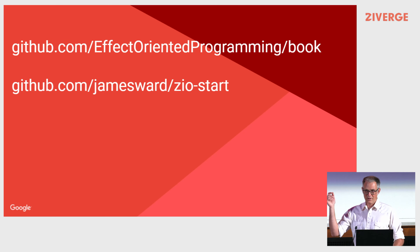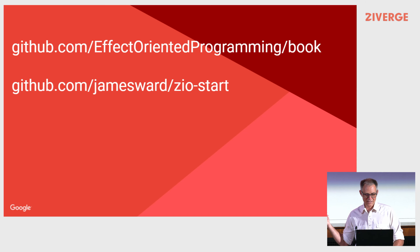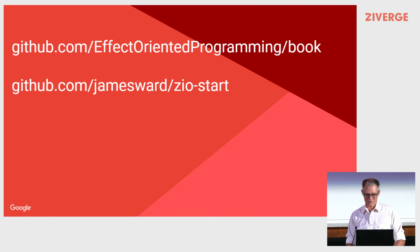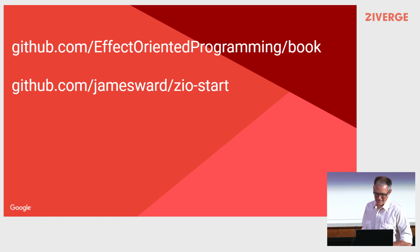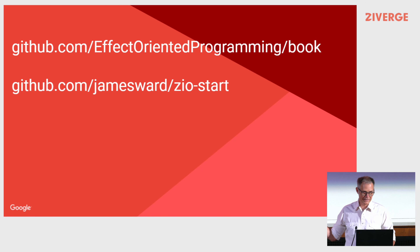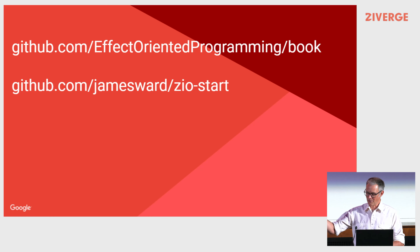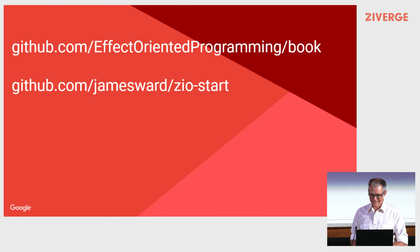A couple quick plugs: Bill from Zivergen, myself, and Bruce Eckler are writing a book called Effect-Oriented Programming — there's a GitHub URL, still early but check it out. It won't be the most in-depth resource but should help people get in the door of this new paradigm. The source code for start.zeo.dev is up on my GitHub — there's still a bunch of things to do. If you want to help, it's up there. Maybe tomorrow we'll hack on getting it moved over to Laminar, since I had to write some JavaScript for this and felt ashamed. We'll replace that with ZIO.